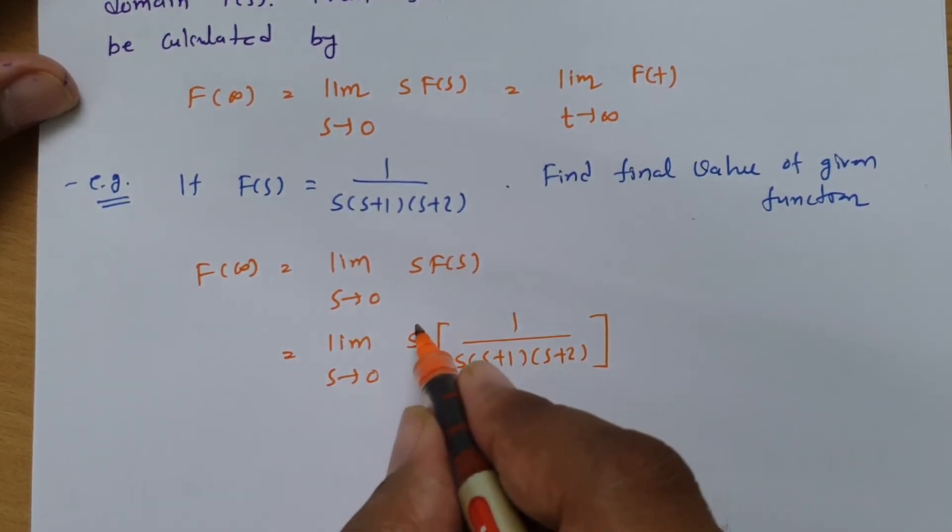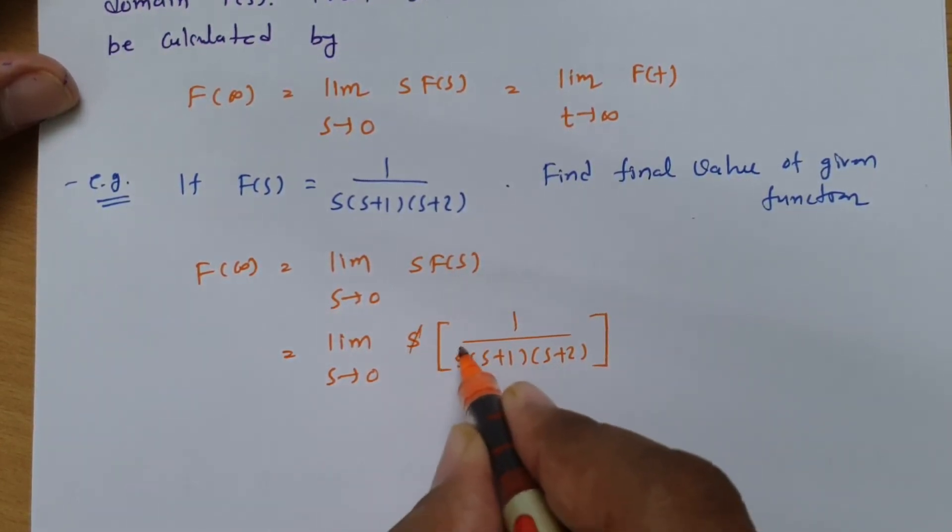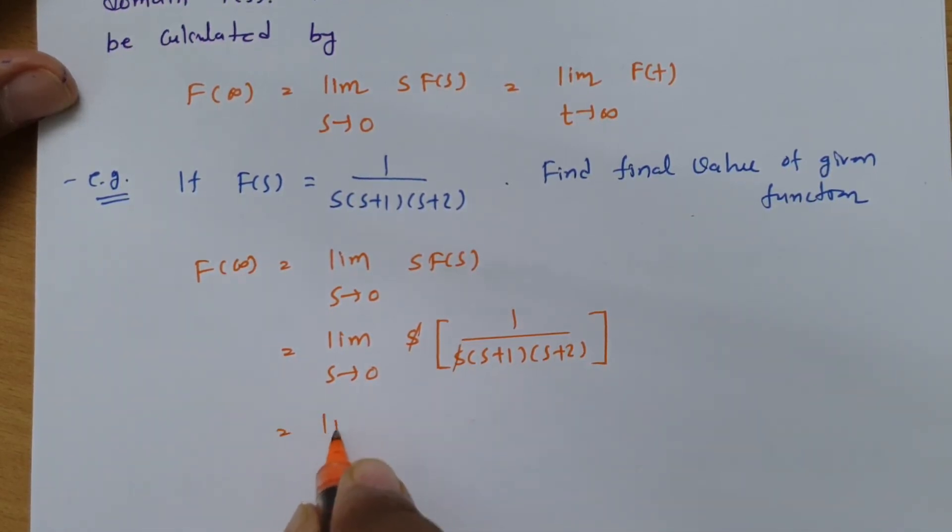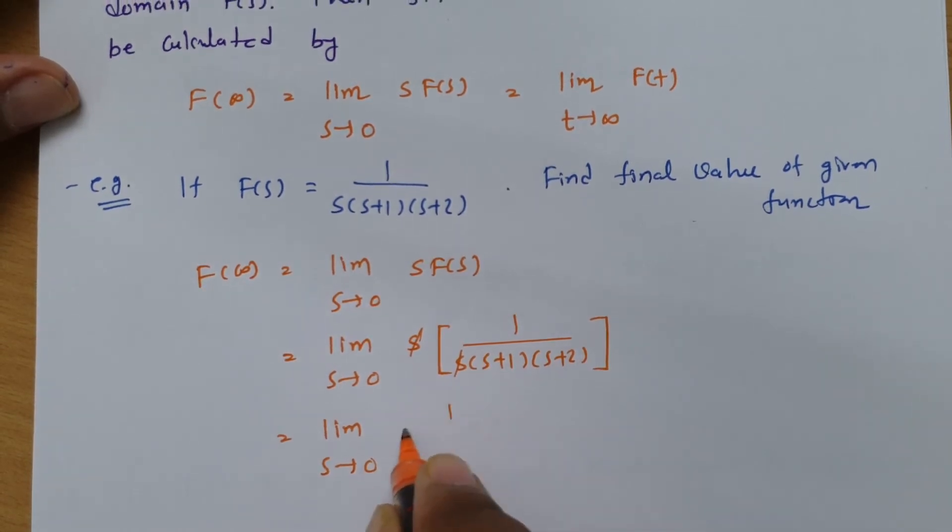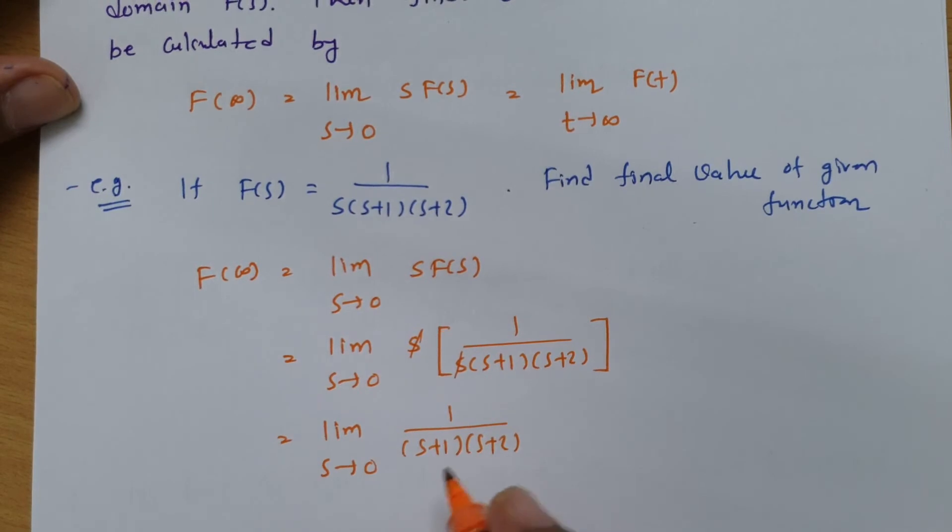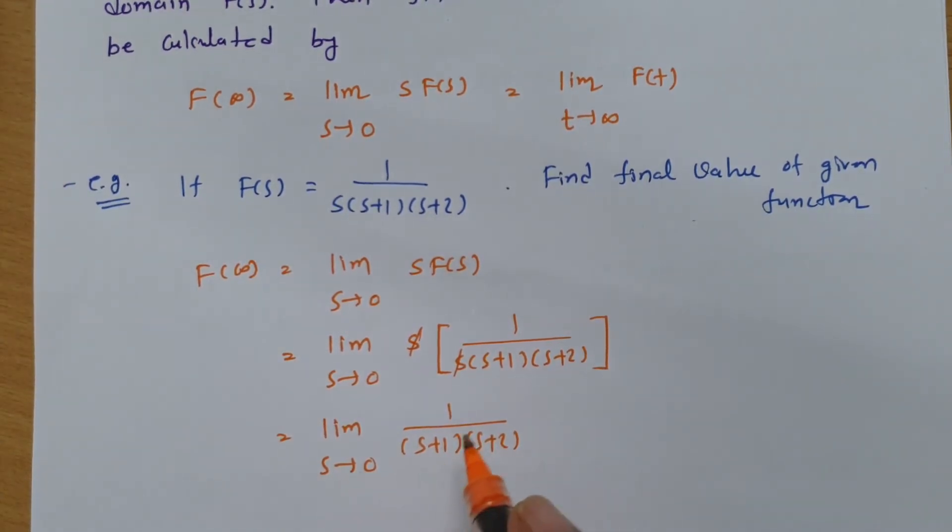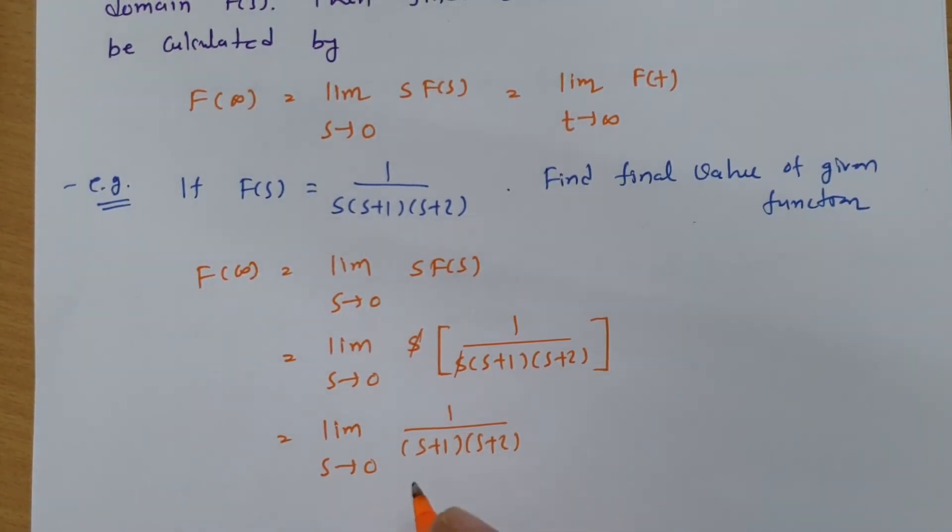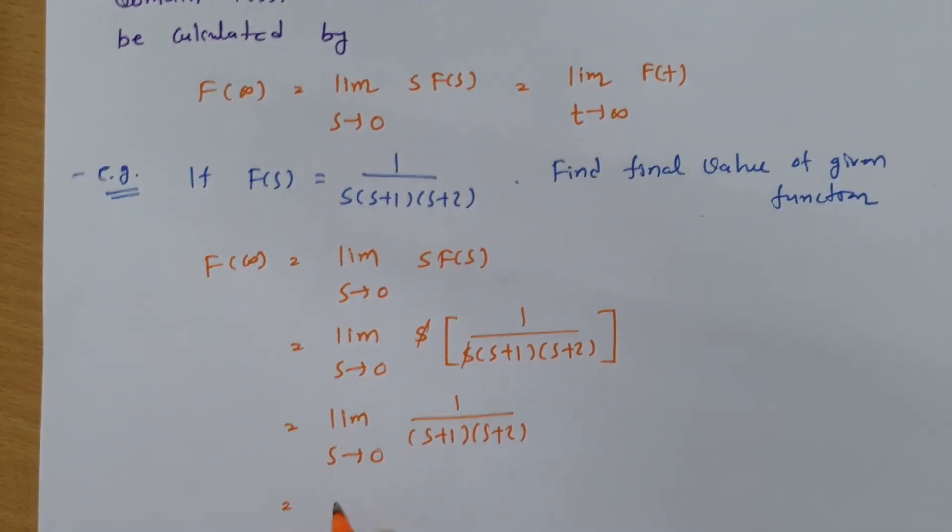Here this s and this s will get cancelled. So you will be getting limit s tends to 0 of 1 by (s+1)(s+2). Now if you substitute s equals 0 in this function, you will be getting the final value.